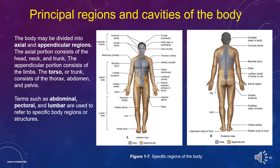The body may be divided into axial and appendicular regions. The axial portion consists of the head, neck, and trunk. The appendicular portion consists of the limbs. The torso or trunk consists of the thorax, abdomen, and pelvis. Terms such as abdominal, pectoral, and lumbar are used to refer to specific body regions or structures.